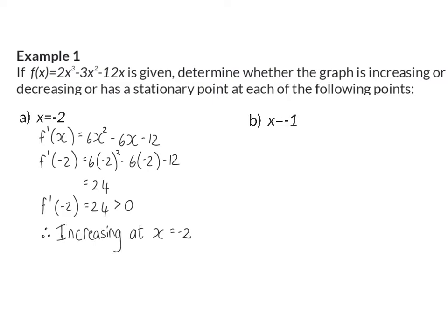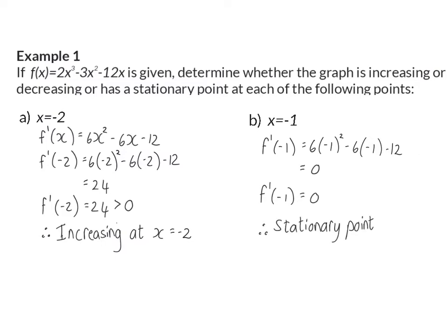In b, we now need to determine whether this graph is increasing, decreasing, or has a stationary point at x is equal to minus one. We already know the derivative, so we can substitute minus one into this derivative. Here we will get a value of zero, and this means that the gradient at x is equal to minus one is exactly zero, which means that this graph has a stationary point at x is equal to minus one.